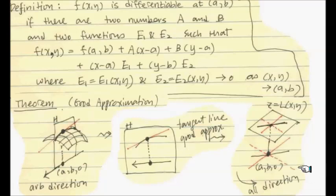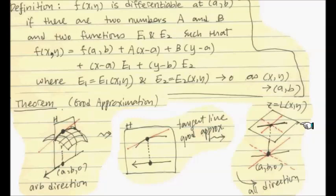Going back to the Mathematica example: in that non-differentiable example, the sectional curve was actually a straight line — those were the blue, red, and thick black lines. Those were really the tangent lines in different directions. They did not form a tangent plane, which is why it's called not differentiable. This is another interesting property that captures differentiability: all the tangent lines of the sectional curves form a single common plane.